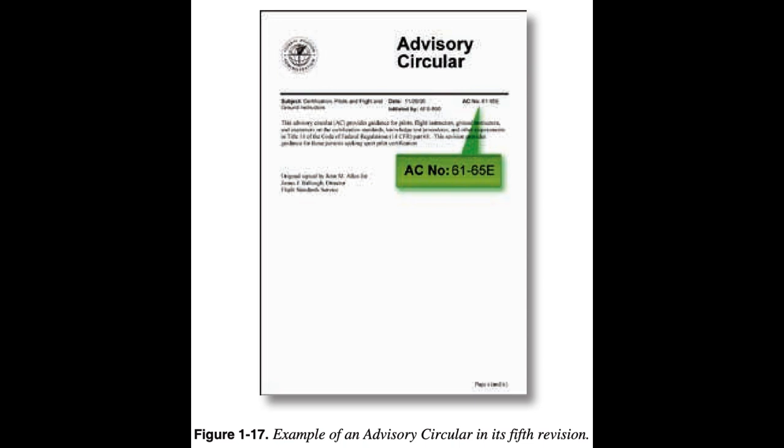There are three parts to an AC number, as in 25-42C. The first part of the number identifies the subject matter area of the AC and corresponds to the appropriate 14 CFR part. For example, an AC on certification of pilots and flight and ground instructors is numbered AC-61-65E. Since ACs are numbered sequentially within each subject area, the second part of the number beginning with the dash identifies this sequence. The third part of the number is a letter assigned by the originating office and shows the revision sequence if an AC is revised. The first version of an AC does not have a revision letter. In Figure 1-17, this is the fifth revision, as designated by the E.